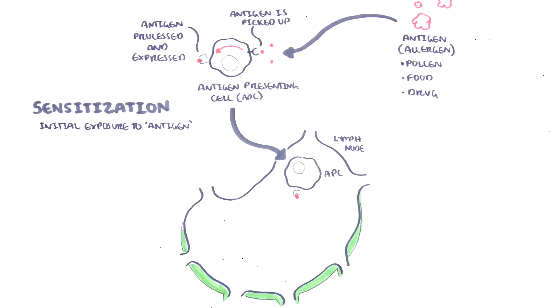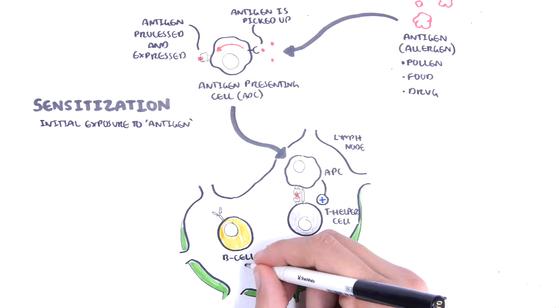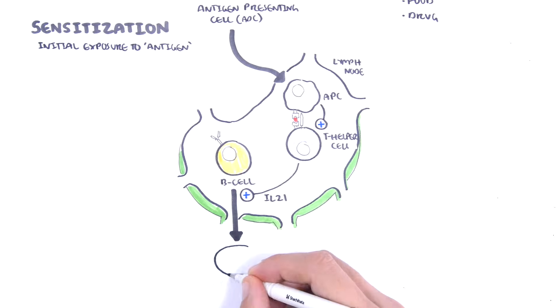So the antigen-presenting cell presents the allergen to the T helper cells, which will then inform the B cells of this new allergen, and will activate the B cells to become plasma cells via interleukin-21.